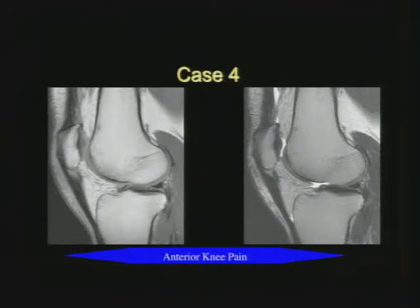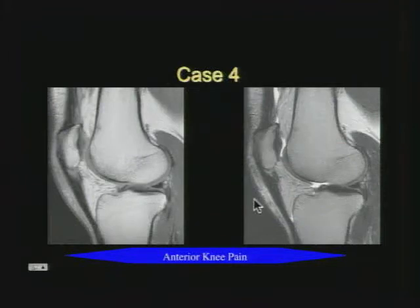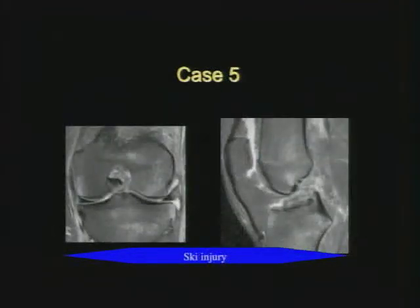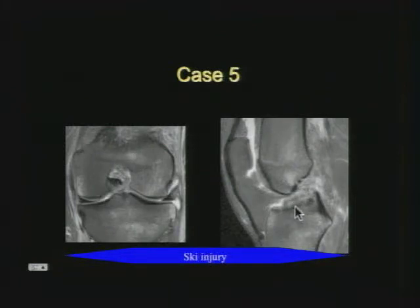People who do a lot of sports with their extensor mechanism get jumper's knee, but garden-variety people who don't do much sport also get it. In our next case, the most important finding is the ACL tear, as Dr. Lynch mentioned — it is tricky.